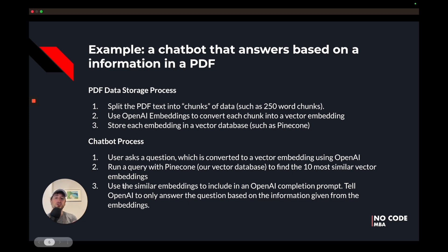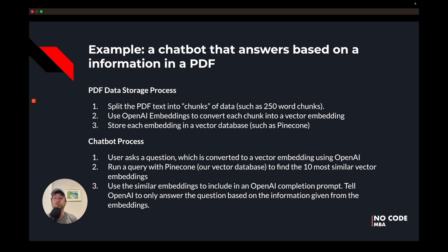Next, we use those embeddings to include in an OpenAI completion prompt. The prompt will say: only answer the question based on the information given from the embeddings, and if you can't answer based on that information, respond with "I do not know the answer." This is how we create a chatbot that only answers based on the information we give it in the PDF. It will make more sense as you learn more about embeddings and build it yourself.